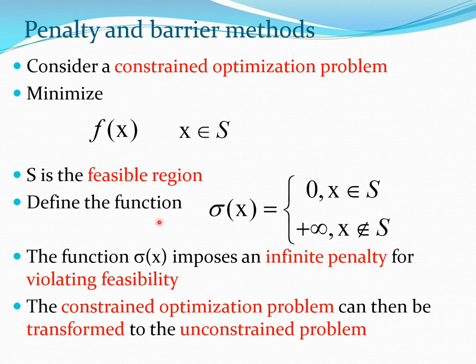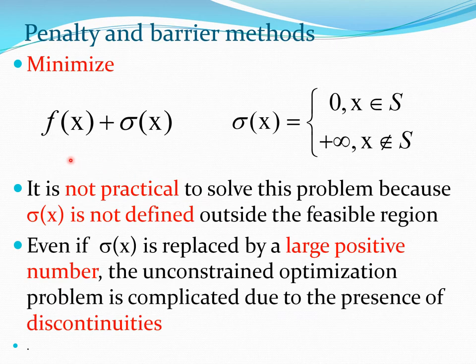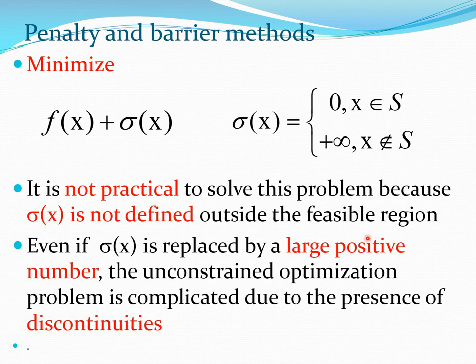By adding f to sigma, we create a new function f(x) + sigma(x), transforming the constrained optimization problem into an unconstrained one. Sigma equals 0 inside the feasible region and becomes infinite outside. This is the basic philosophy behind the penalty and barrier method, though it is not always practical because sigma is not well-defined outside the feasible region. You could replace sigma with a large positive number, as is sometimes done in stochastic optimization.